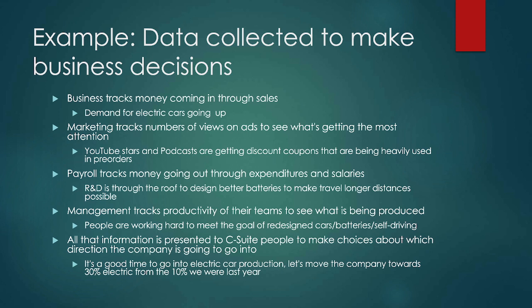All of that data being collected will get filtered through the company and up through the different chains of management. Finally, the C-suite — CEO, CFO, CISO, and so on — will make choices about directions the company could go. Do we want to do more or less electric car production? Do we want to do more or less electric car charger production? Maybe they've decided electric cars are not the future and instead want to invest R&D elsewhere. Those are the types of things a company might do with data to make decisions.